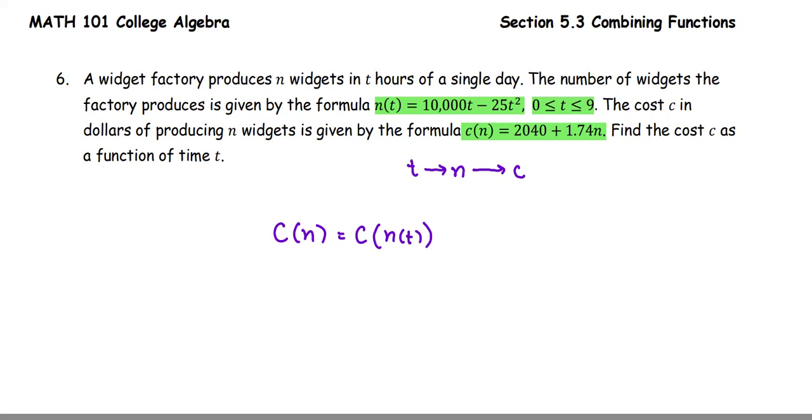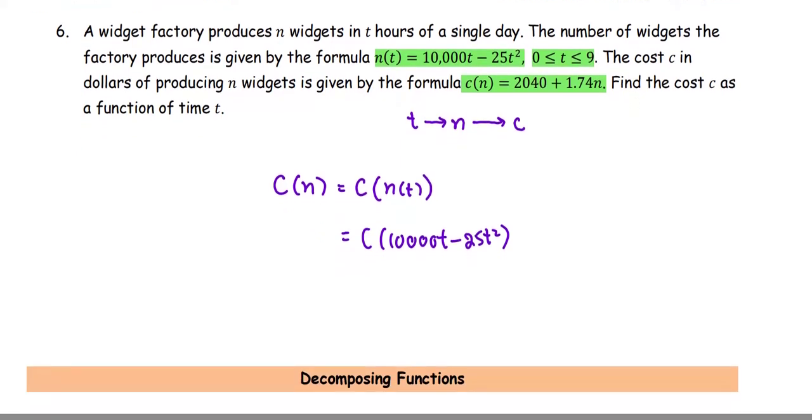In this case, n is 10,000t - 25t². We use it as the input for the cost function. Then we have 2040 + 1.74 multiplied by n. Since n is the whole expression that we use as the input, it's going to be 10,000t - 25t².